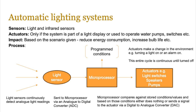The sensors used in automatic lighting systems are generally light and infrared sensors. The actuators are normally water pumps and switches, but if you're using it as part of a light display then actuators come into play; otherwise most of the time it's just sensors. The impact based on the scenario could mean that you reduce energy consumption or increase bulb life, for example.